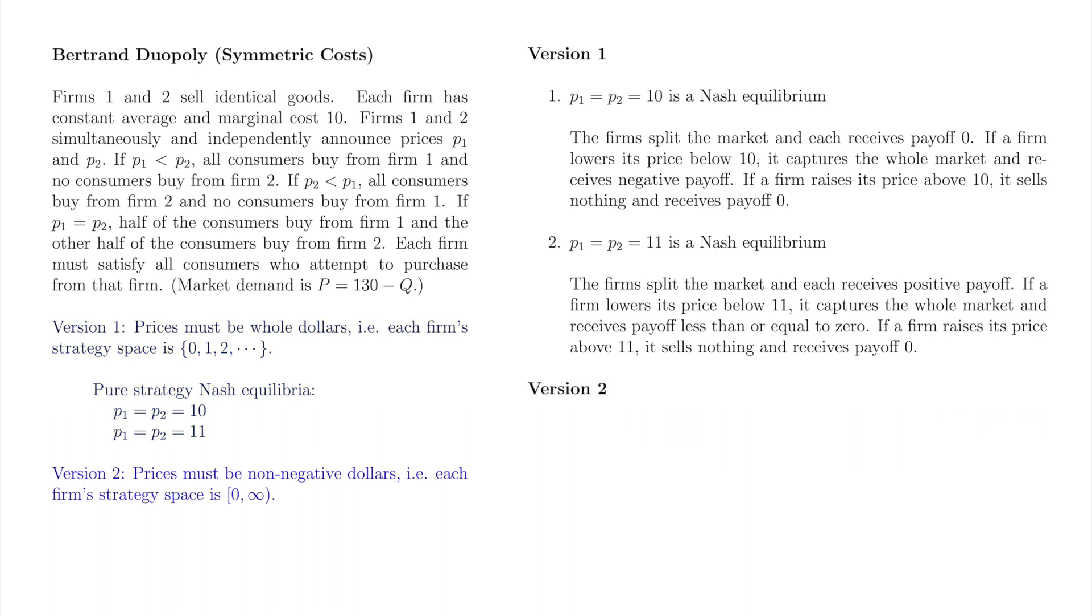Now, we'll allow the firms to select any non-negative price. $10.27, $9.99.9999, the square root of 211, $3.1415926535, you name it.